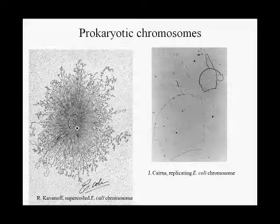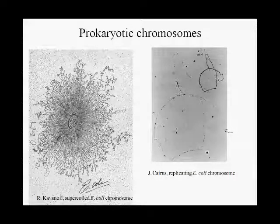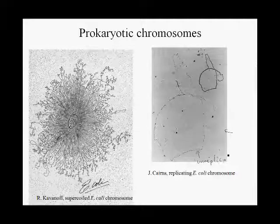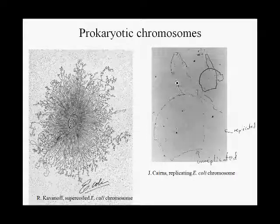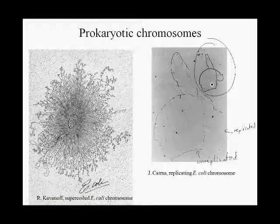If we use detergents and get rid of all of the protein, what we then see is a figure that looks like this. In this figure, they have caught the large E. coli chromosome in the process of being replicated. This portion of the chromosome is unreplicated. This portion is replicated — we see one copy here and the other copy here. This inset shows the figure reduced with the outline of the actual DNA molecule darkened so you can see it.